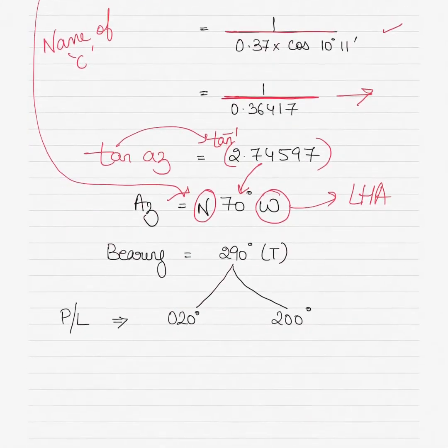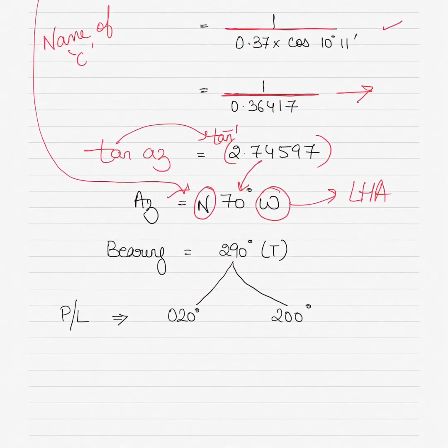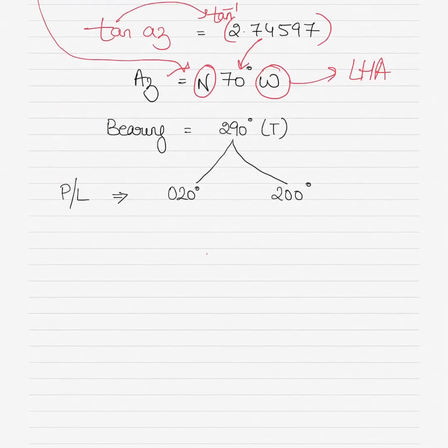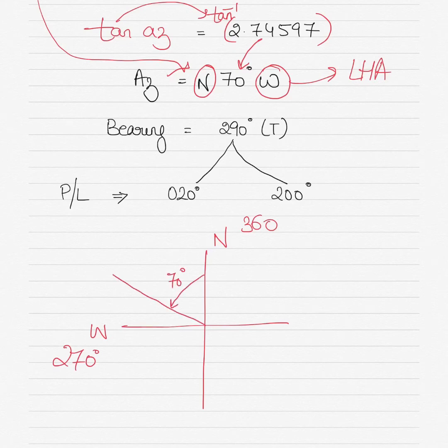Therefore my azimuth is named north 70 west, which equals 290 degrees. If this is north and this is west, and this is 360 and this is 270, if I'm going north 70 degrees west somewhere here, this value will be 360 minus 70, which is 290 degrees. My true bearing is 290 degrees.